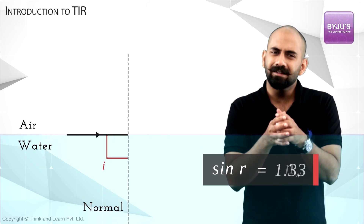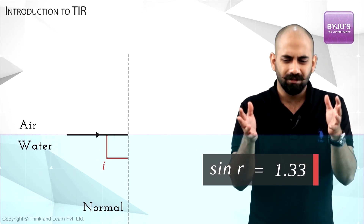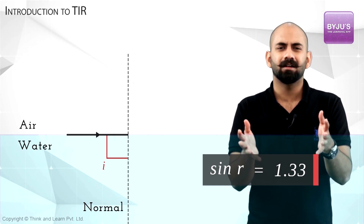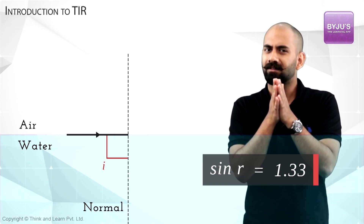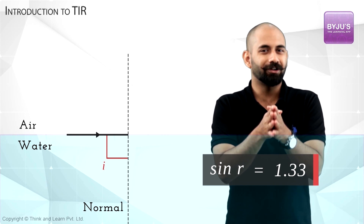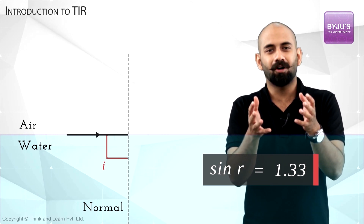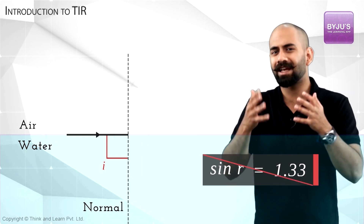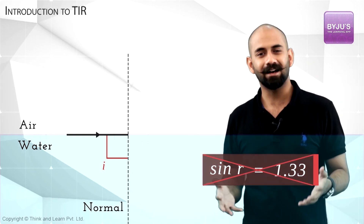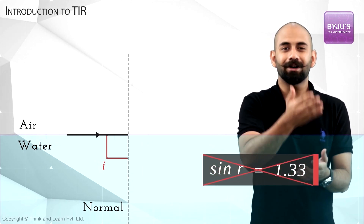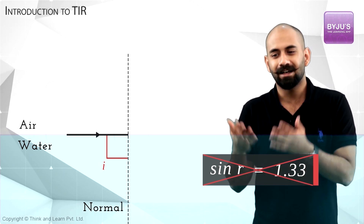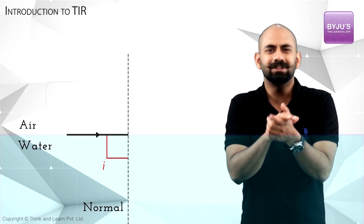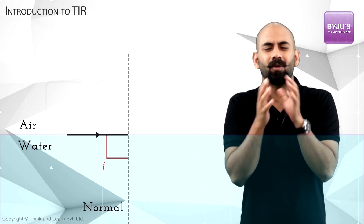But n equals 1.33 for water, so this means sin(r) = 1.33. But wait — is that even possible? The sine of any angle cannot be greater than 1. So there is no solution for this equation, which means we made a mistake somewhere.